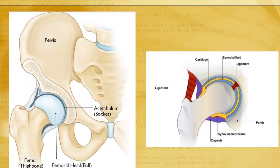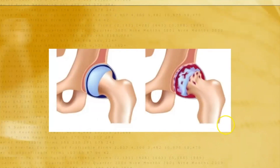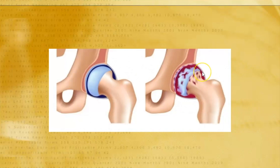What happens in ankylosing spondylitis is there is inflammation of the synovial membrane. The synovial membrane becomes inflamed, becomes swollen, and that is what causes the hip pain. This phase is called hip synovitis. So the normal joint — the synovium now gets inflamed, thickened, and red like this. This is responsible for the pain at the joint.